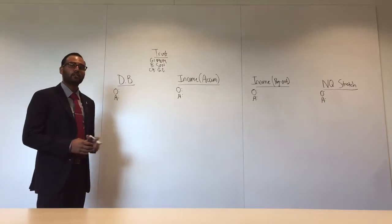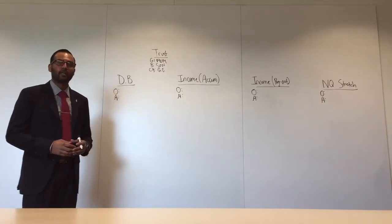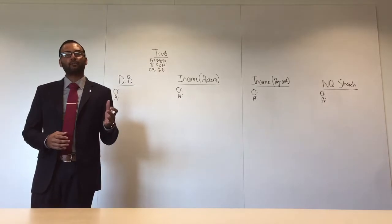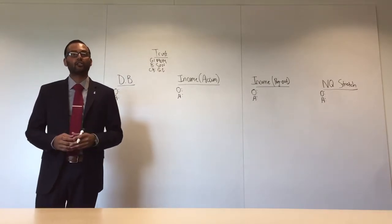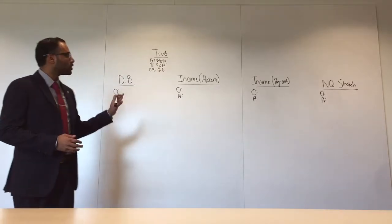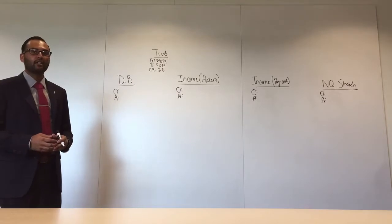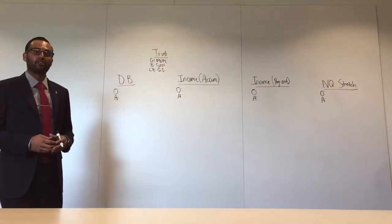But before I get into anything that's on the board, I want to talk a little bit about taxation. For an individual to be in the highest tax bracket, it takes over $400,000 in earned income. For a trust to be in the highest tax bracket, it takes $12,500 in earned income.